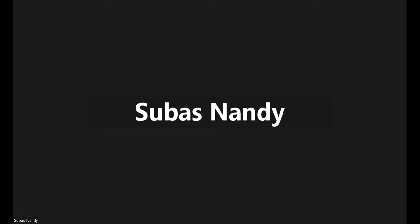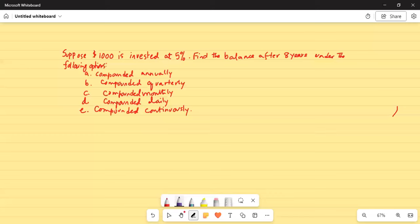Good afternoon everybody. I hope you are doing great this afternoon. Today we are going to work on a problem on compounding. So here I go. Suppose $1000 is invested at 5%, find the balance after 8 years under the following options. Part A compounded annually.